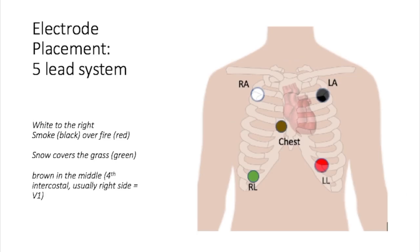In a five lead system, the white, black, and red are still in the same positions under the clavicle in the soft tissue space — right arm, left arm, left leg. We're going to add two additional views: the chest lead which gives us V1, looking particularly at the right ventricle and the interior right septum, and then the right leg limb lead which is green.